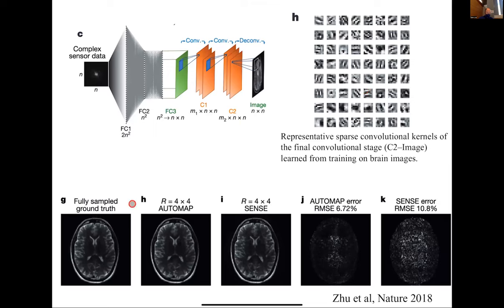If you look at the convolutional kernels that the network learns, you see stripy patterns that look remarkably like Fourier functions. The network basically rediscovers, by looking at millions of images, that stripy patterns are a good representation of data. For example, at 4×4 acceleration — 16 times faster — the network does pretty well, and the error from AUTOMAP is lower than from the best SENSE algorithm. Once coefficients are trained, the forward computation is very fast.